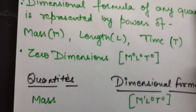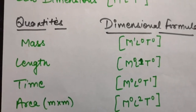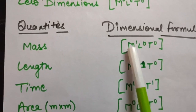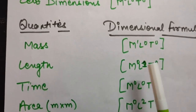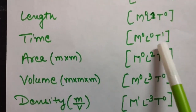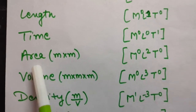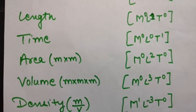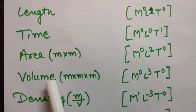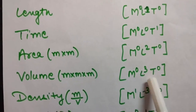Now let us take various quantities and see their dimensional formulas. For mass only — it is M¹ L⁰ T⁰ because there is no length or time. For length — M⁰ L¹ T⁰. For time — M⁰ L⁰ T¹. For area, defined as length into length, it will be L squared — so M⁰ L² T⁰. For volume, defined as length into length into length, it is L cubed — M⁰ L³ T⁰.